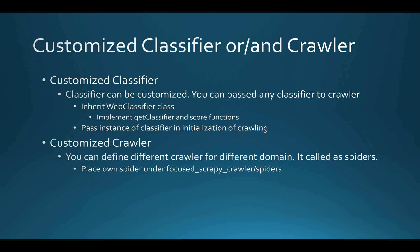You can customize the classifier — since the classifier is one of the inputs to the crawler, you can always define your own. You just need to inherit the WebClassifier class, implement the get_classifier and score functions, and pass the instance when initializing the crawling. Second, you can write your own spiders. Spiders are basically crawlers for a specific domain. You place them under the spider folder and can take my existing spider as an example, which covers all domains but can be extended for your own domain.